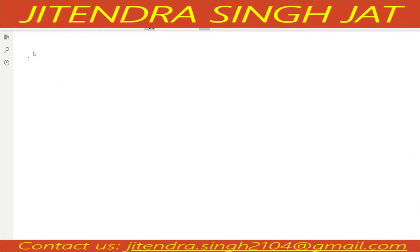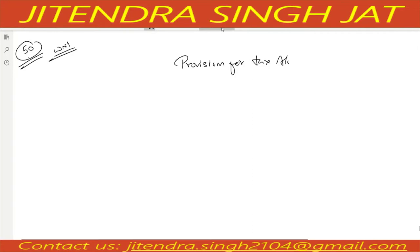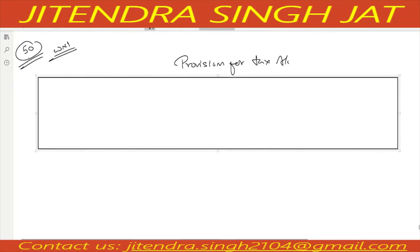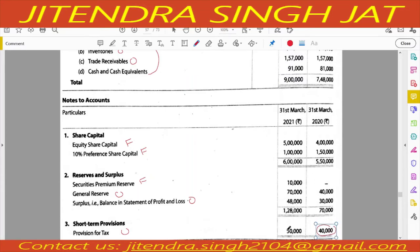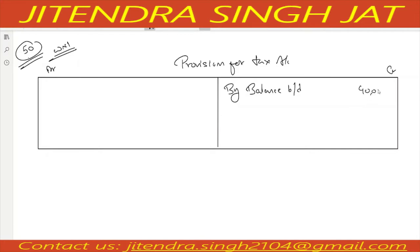In this question two accounts we need to prepare: one is provision for tax and second is machine account. Working note number one - provision for tax account. Provision for tax account starts from the credit side. We write opening balance - by balance brought down. The opening balance is given 40,000 and closing is 50,000. So 40,000 opening balance, and closing balance carried down is 50,000.